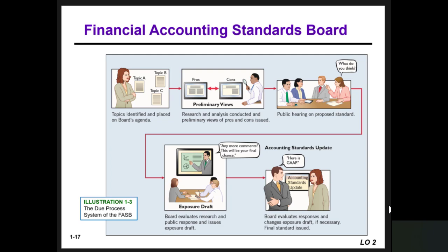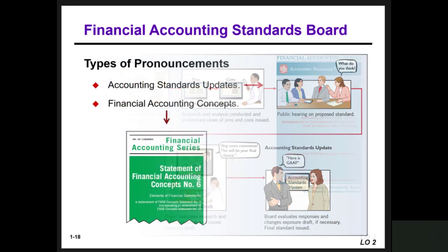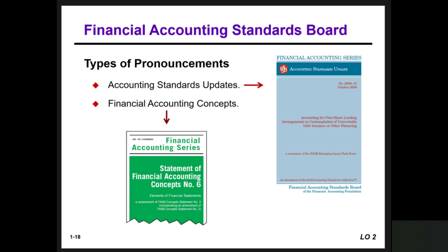The FASB due process system works as follows: topics are identified and placed on the board's agenda; research and analysis are conducted and preliminary views are issued; public hearings on proposed standards are held; the board evaluates research and public response and issues exposure drafts; the board then evaluates responses and changes exposure drafts if necessary; and finally a final standard is issued. The types of pronouncements FASB creates are accounting standard updates and financial accounting concepts.